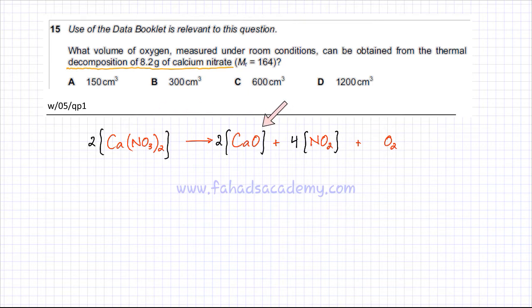Calcium nitrate decomposes to produce calcium oxide, NO2, and O2. The mass of calcium nitrate is given, it's 8.2 grams. We can find moles using moles equals mass divided by molar mass, which is also given. The MR is 164. Using my calculator, 8.2 divided by 164 gives 0.05 moles of calcium nitrate.